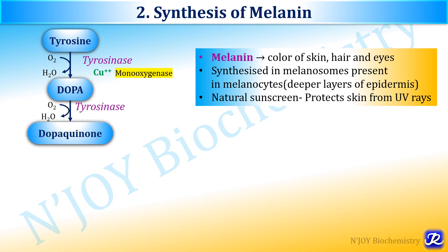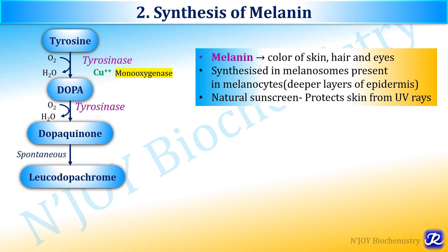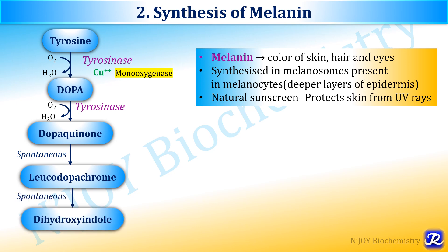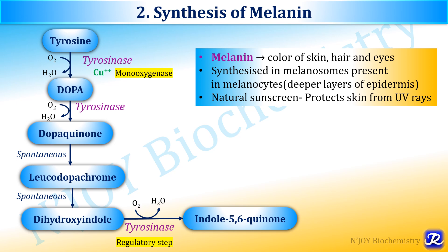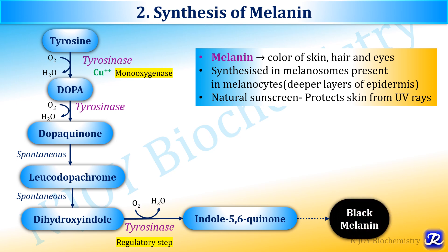In the second reaction, DOPA quinone is formed by the action of the same enzyme tyrosinase. Further, dopamine undergoes non-enzymatic or spontaneous formation of leucodopachrome, and from leucodopachrome there is formation of dihydroxyindole. Dihydroxyindole by action of enzyme tyrosinase leads to formation of indole quinone — indole 5,6-quinone — which is the regulatory step of melanin synthesis. Melanochromes are formed from these indole quinones, which on polymerization are converted to black melanin.